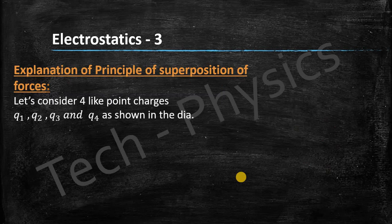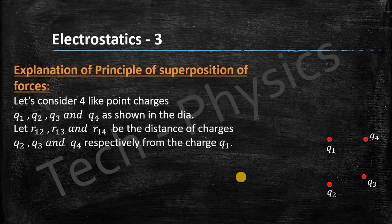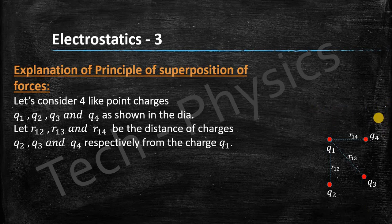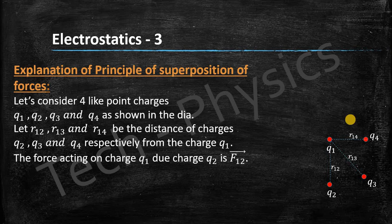For explanation, let us consider four like point charges q1, q2, q3, and q4 as shown in the diagram. Let r12, r13, and r14 be the distances of charges q2, q3, and q4 from q1. The force acting on charge q1 due to charge q2 is F12. Since all four are like charges, they repel each other — so q2 repels q1 and the force F12 acts in the direction away from q2.